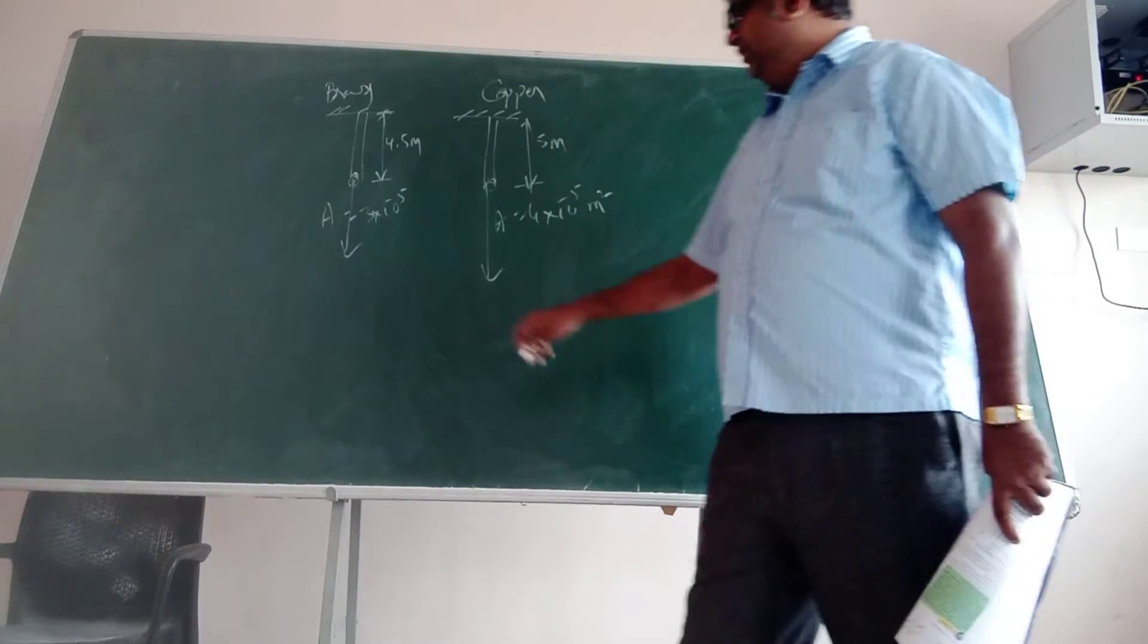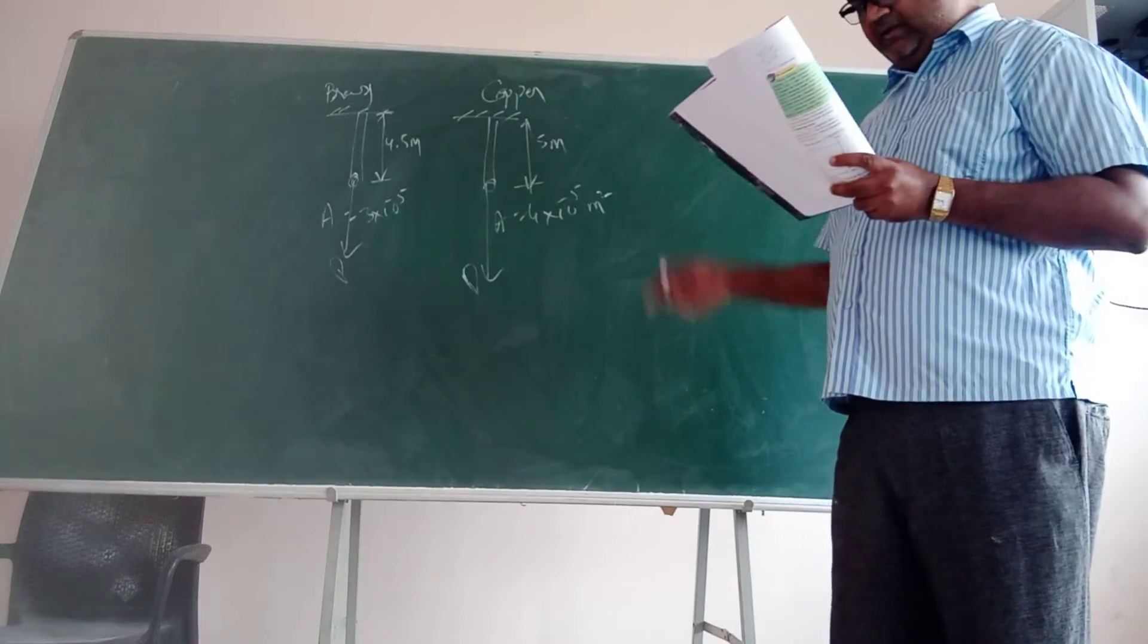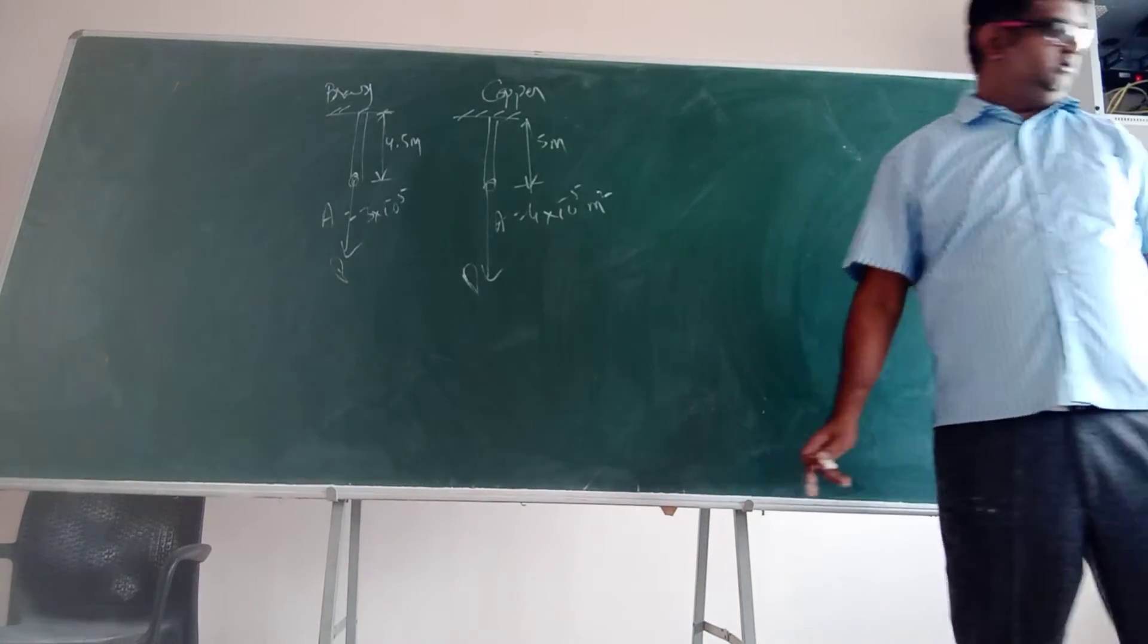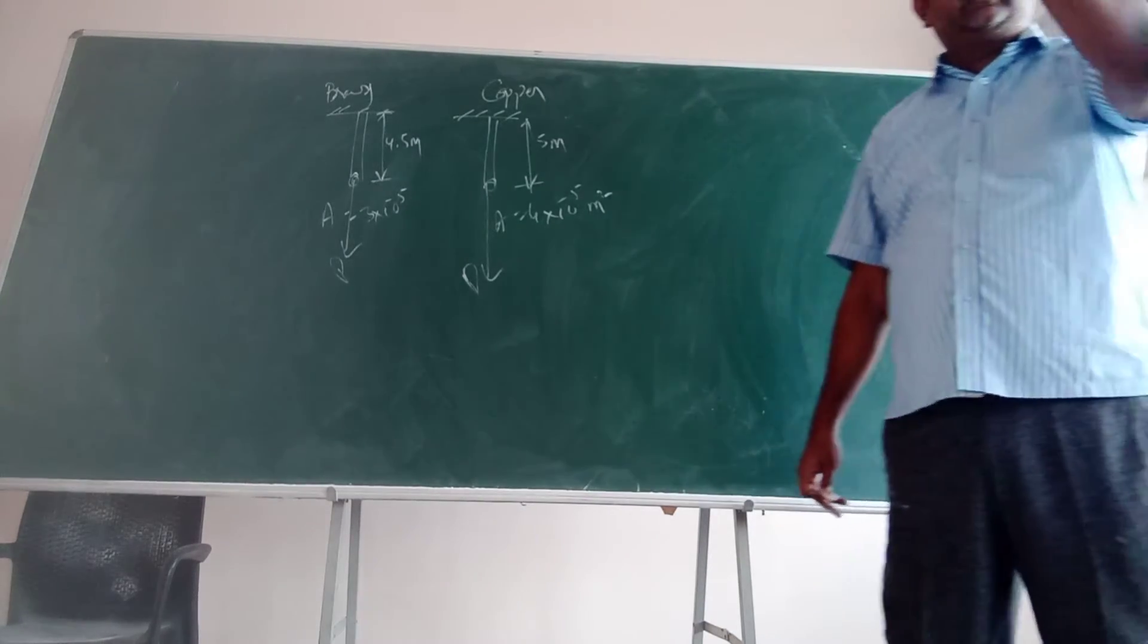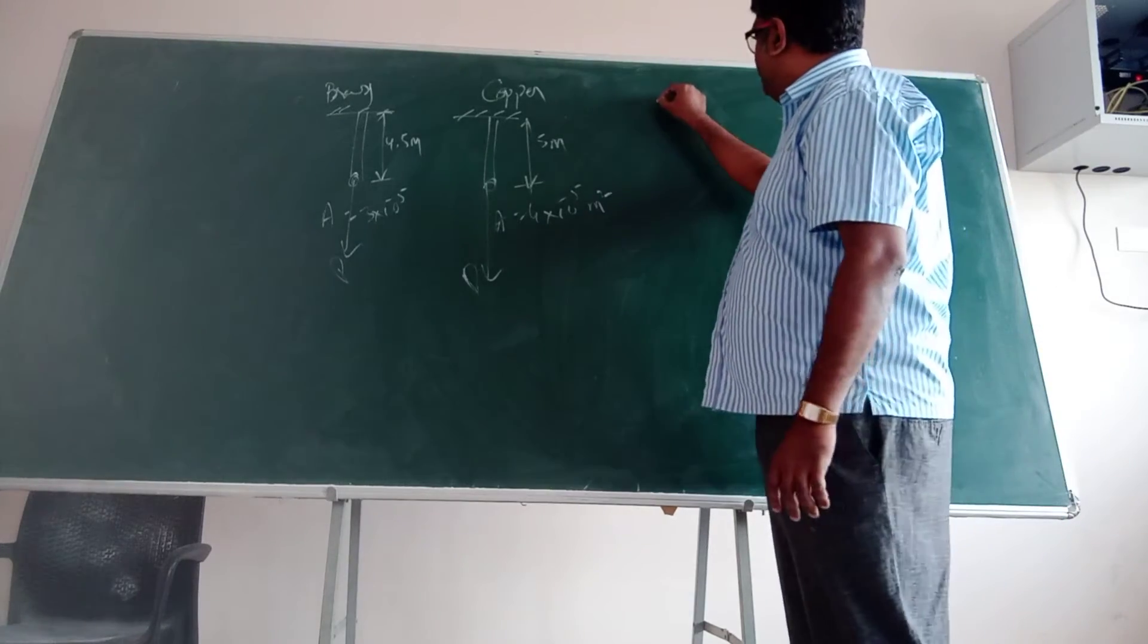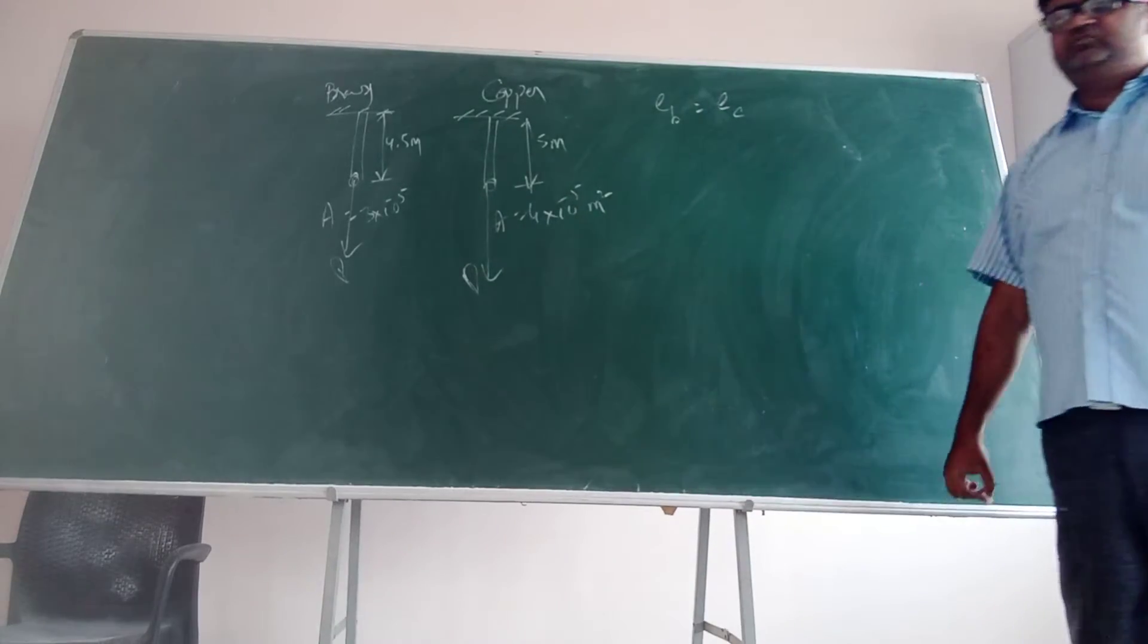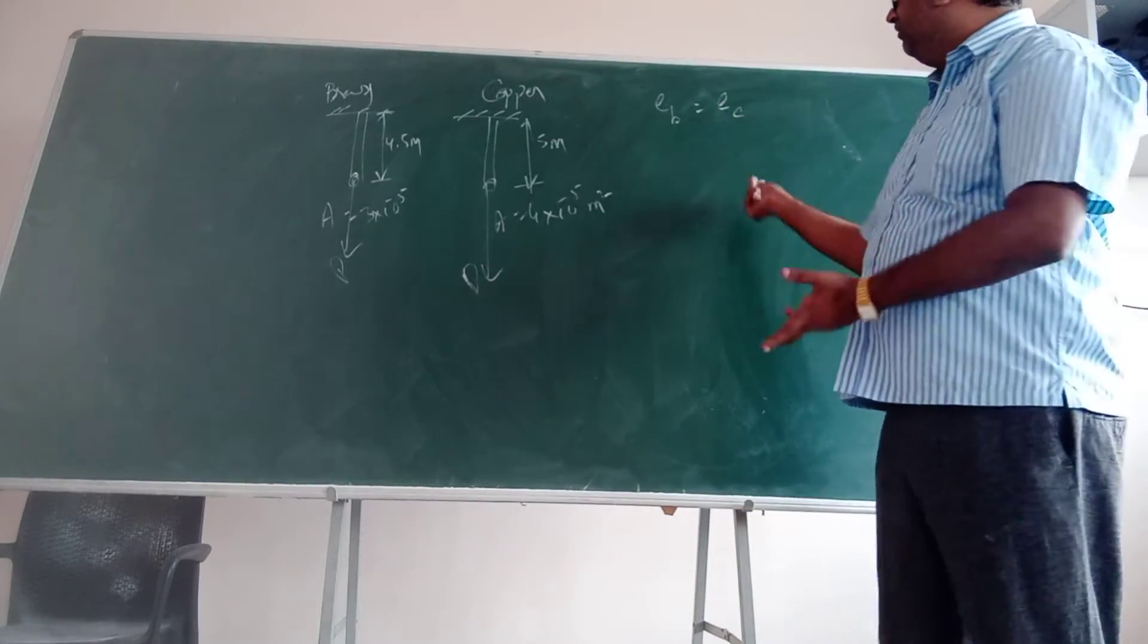Dragging it, so this load is same. Alright. And he has put a condition: the same elongation is produced in both the wires. The same elongation is produced in both the wires, that is the condition. We need to identify the condition in the question. What is the condition? Let's say elongation E of B is equal to E of C. C means copper here, B means brass here.